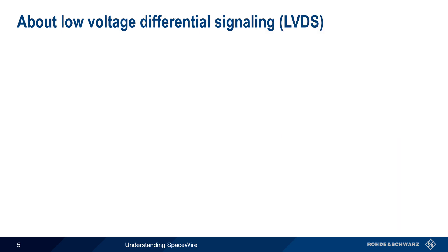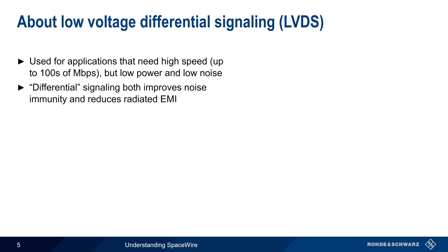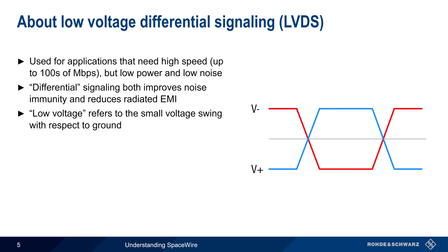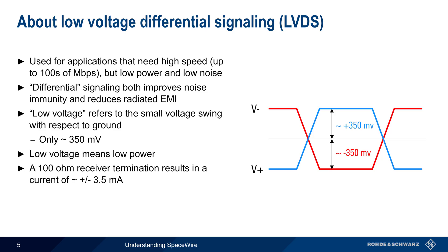We'll begin with Low Voltage Differential Signaling, or LVDS. LVDS is often used for applications that need high speed, but which also need both low power consumption and low noise. The differential part of LVDS improves immunity to external noise, and also helps to reduce noise radiated by the system itself. The low voltage part refers to the relatively small voltage swing with respect to ground. In the case of SpaceWire, this swing is approximately 350 millivolts. Note that low voltage in turn means low power. If the receiver has a terminal resistance of 100 ohms, then the resulting current is only about plus or minus 3.5 milliamps, with a positive current being a logical 1 and a negative current being a logical 0.